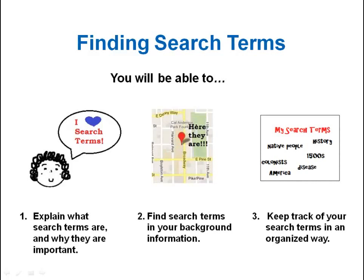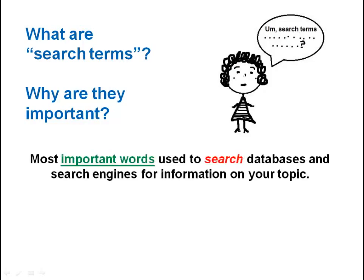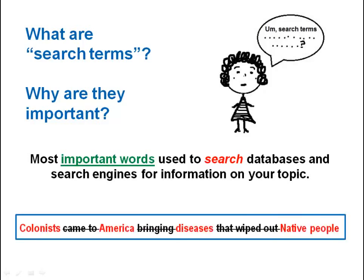For this tutorial, I'll call them search terms. You may be asking yourself, what are search terms anyways, and why do they matter? Search terms are the words you use to look for information in a database, including search engines like Google. They can really help shape your research and the information you find or don't find. Search terms are the most important or meaningful words in your research topic. In the sample statement, I crossed out the secondary words to get to the main words I'll use to search.